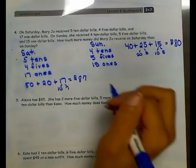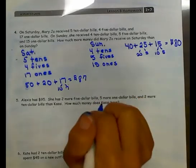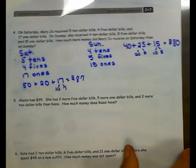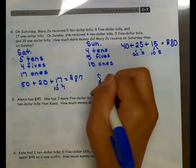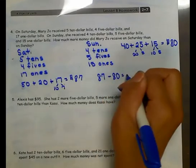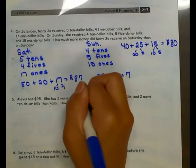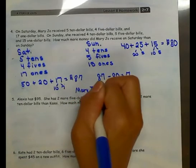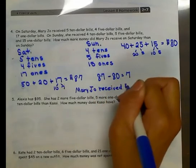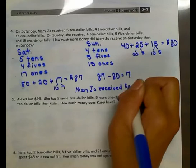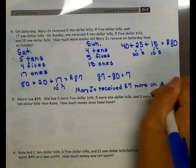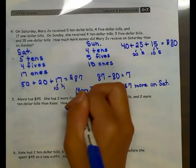Now I need to figure out how much more she received on Saturday than on Sunday. So to figure that out, I'm going to subtract: $87 on Saturday minus $80 on Sunday leaves me with 7. So Mary Jo received $7 more on Saturday than on Sunday.